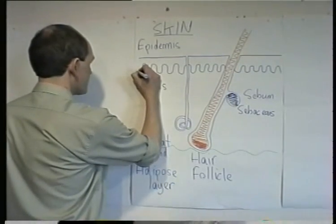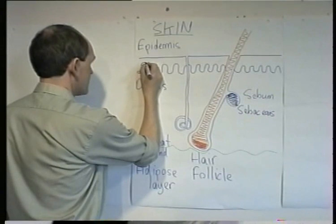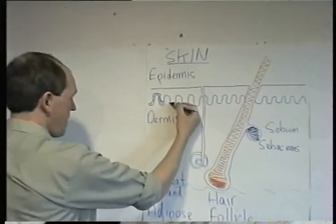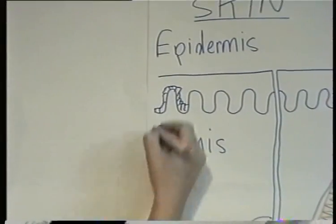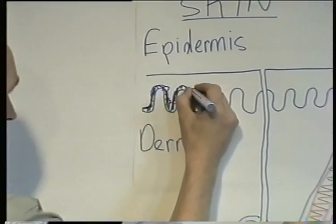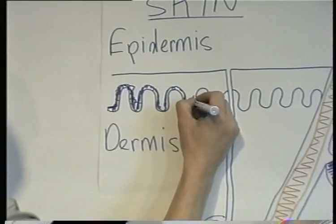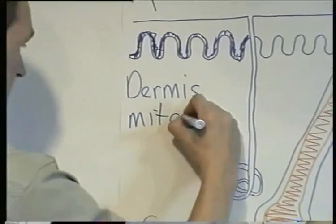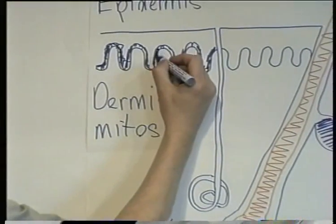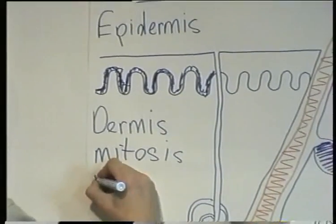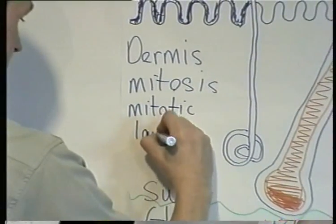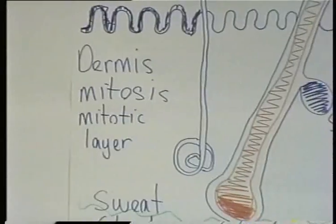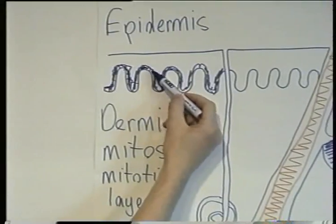Now, the bottom layer of the epidermis is an area of active cell division. There is active mitosis going on in the bottom layer of the epidermis, around about here at the bottom of the epidermis. So the cells here are alive and actively dividing by simple cell division — the process of mitosis. For this reason, this bottom layer of the epidermis is called the mitotic layer, where mitosis is actively carrying on. As these cells age, they are replaced by new cells from the mitotic layer.